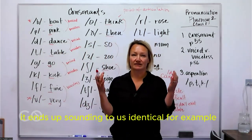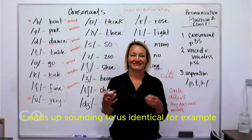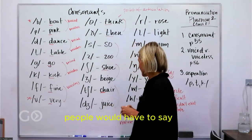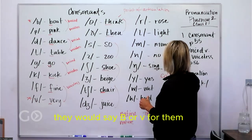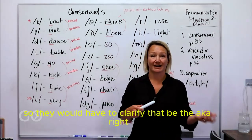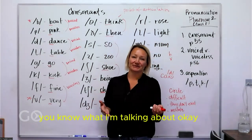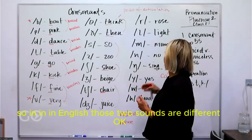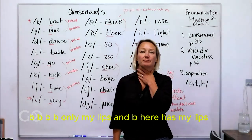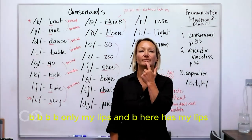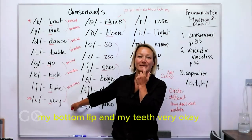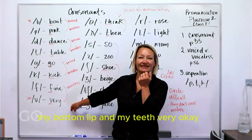For you, it ends up sounding to us identical. For example, when I was living in South America in Peru, people would have to say 'B or V' — for them it's pronounced the same, so they would have to clarify: 'B de vaca.' So if you're a Spanish speaker, you know what I'm talking about. In English, those two sounds are different. 'B' — only my lips. And 'V' — my bottom lip and my teeth. 'Very.'